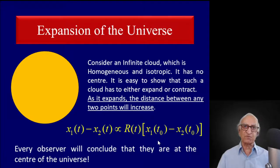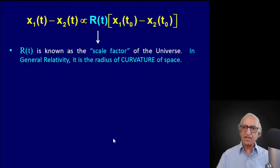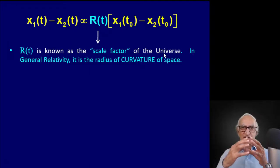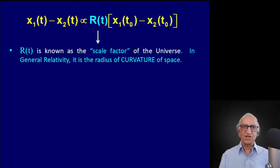This factor R(t) is known as the scale factor of the universe — it tells you how distances change with time, increasing or decreasing as the universe expands or contracts. In general relativity, this scale factor R(t) — which entered into the Friedman-Robertson-Walker metric — is actually the radius of curvature of space.